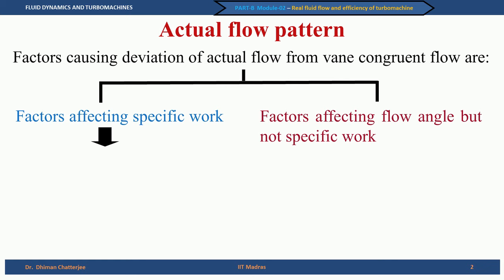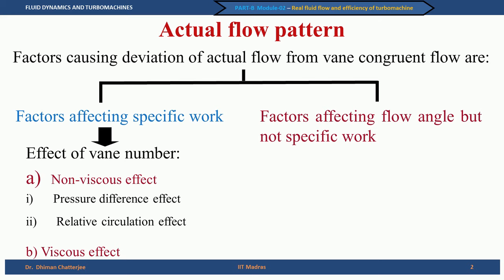We can talk about the effect of vane number. One of the assumptions of vane congruent flow was that there are infinite number of vanes. In the real world, infinite vanes are not possible — the vane numbers are always finite. With finite vane numbers, we can see two effects: one considering the fluid as viscous, and the second considering the fluid as inviscid.